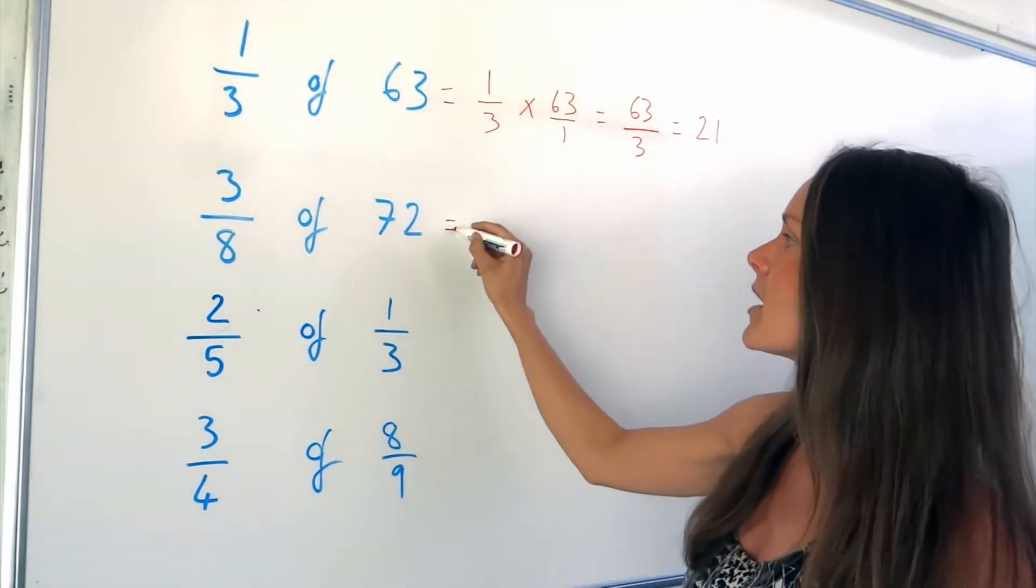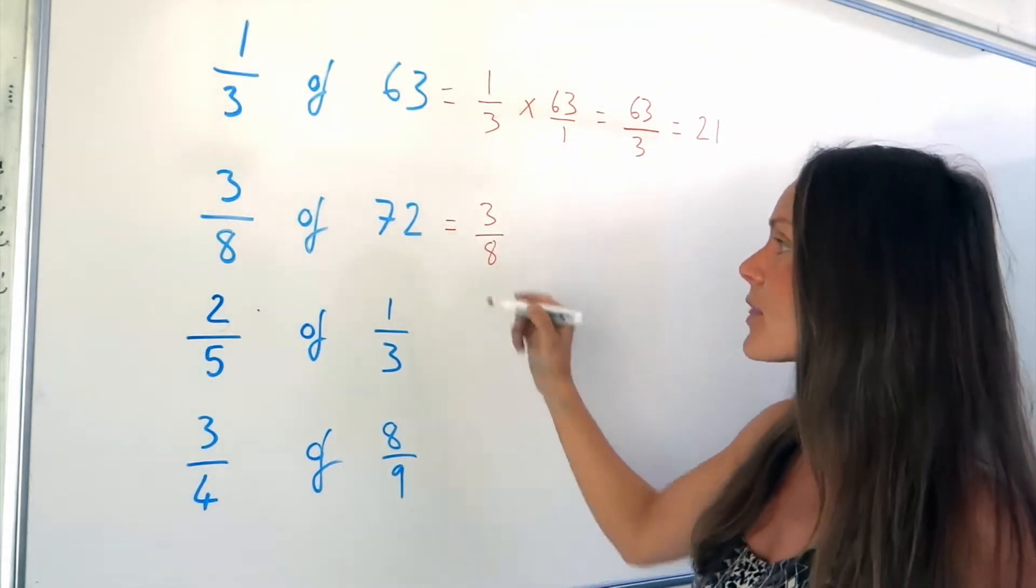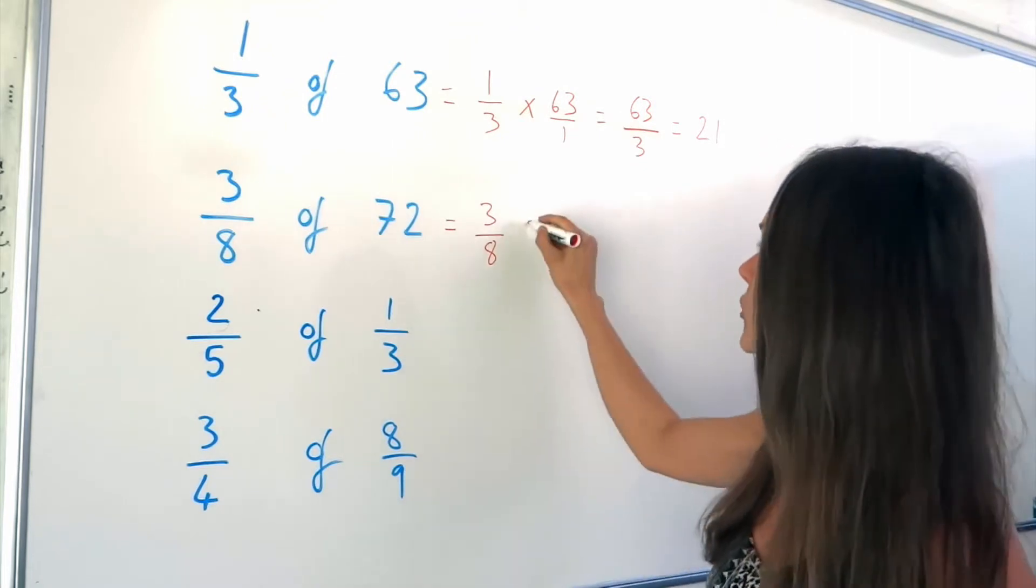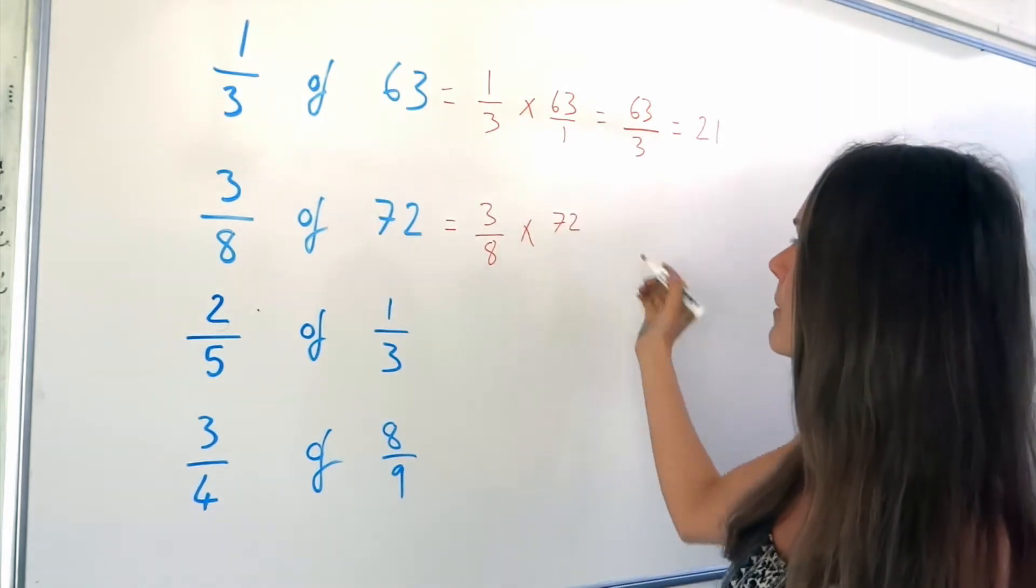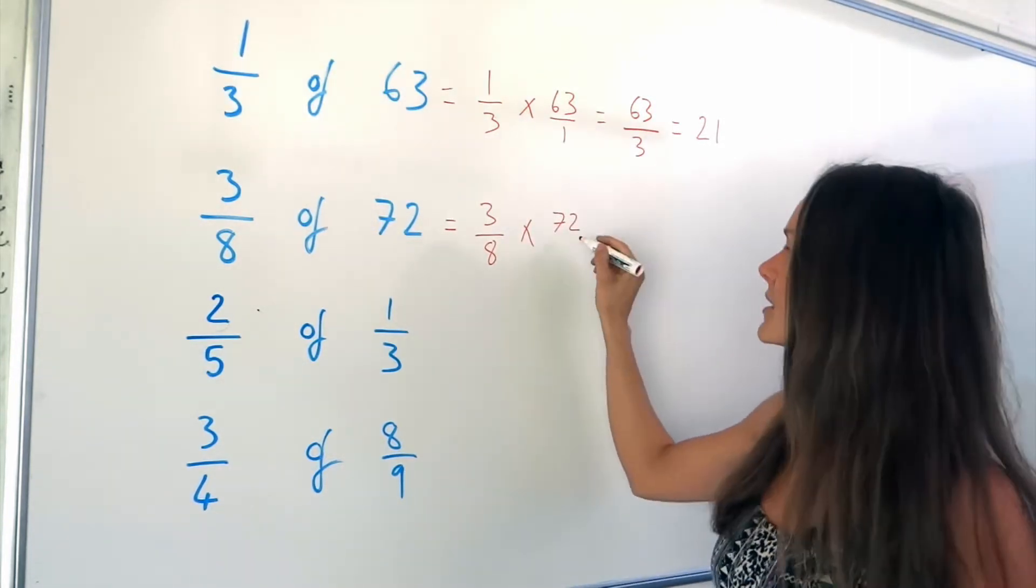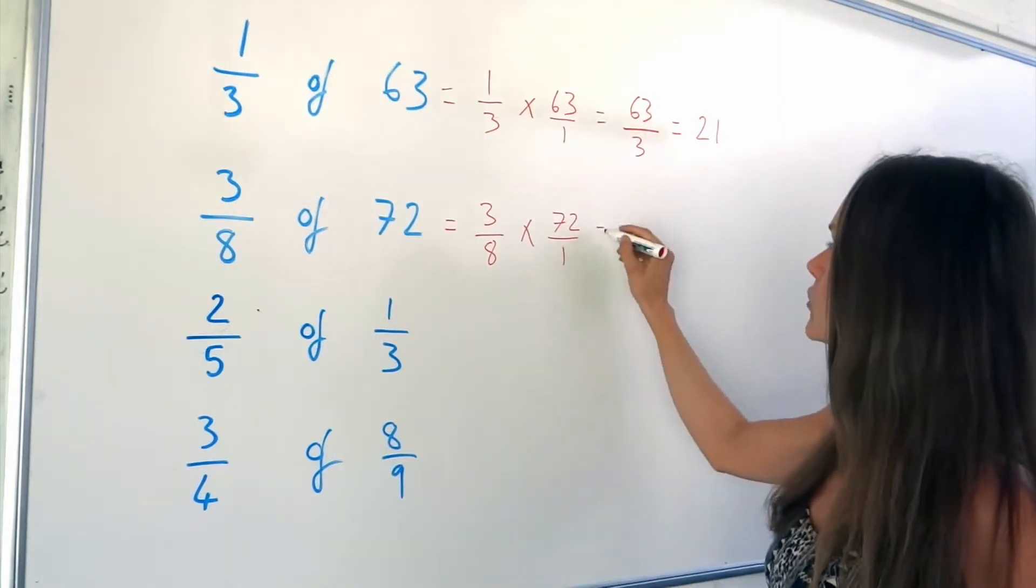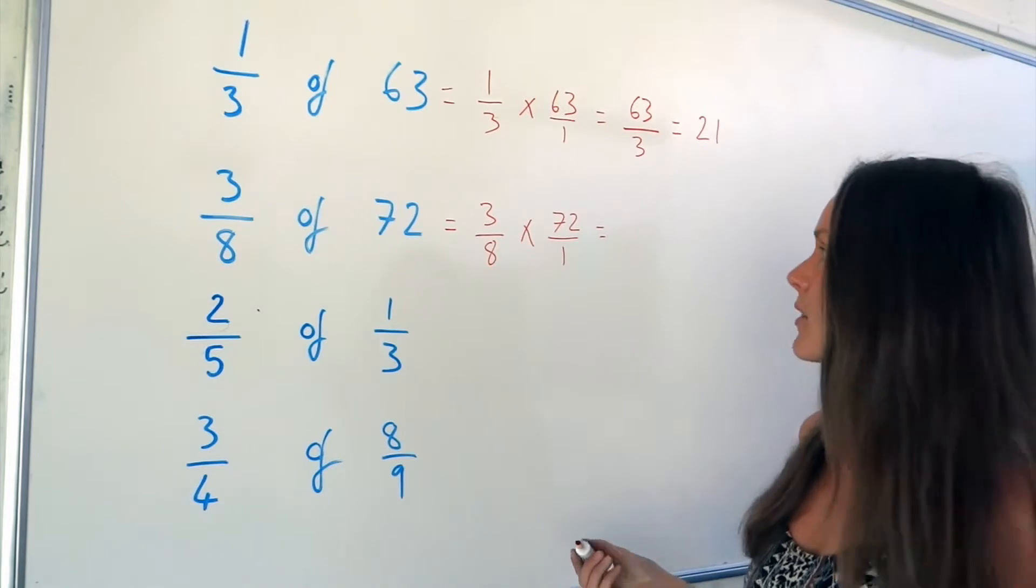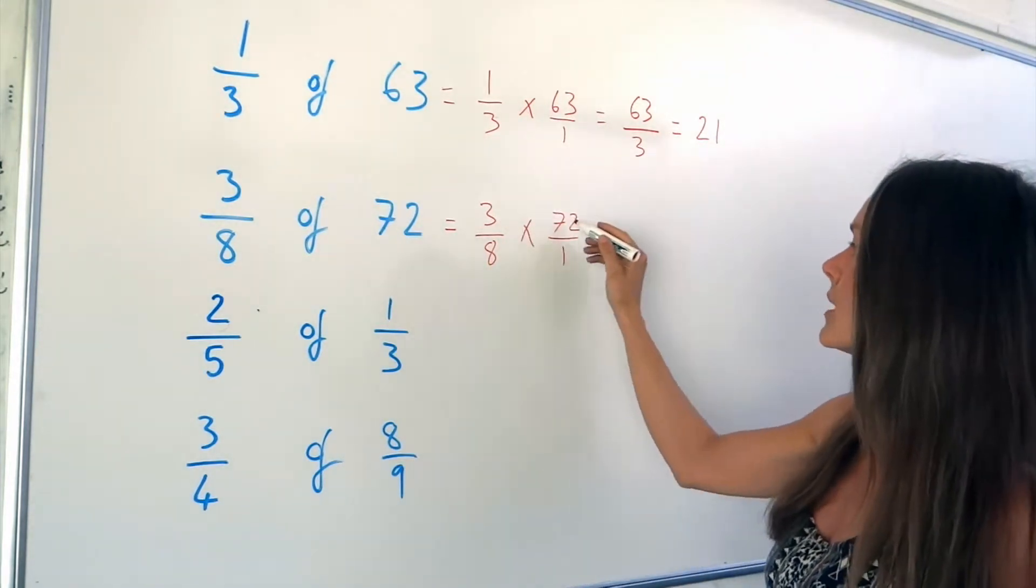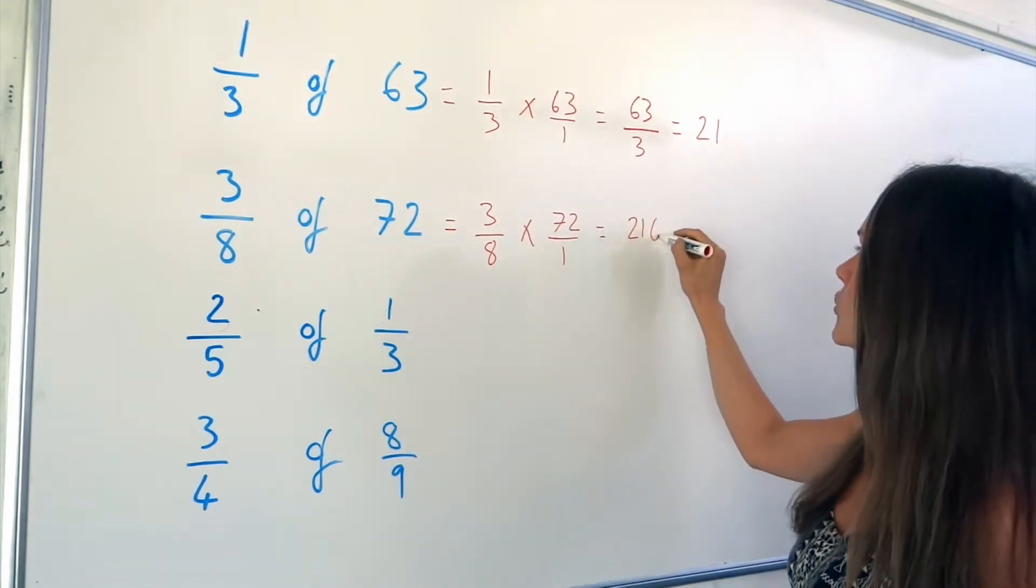On to the next one. So again, I'm going to multiply that fraction with the number 72. Now just as before, remember, 72 is the same as saying 72 over 1. So now I'm going to multiply the numerators together. So if I multiply 3 by 72, I get 216.